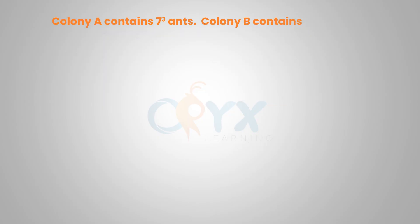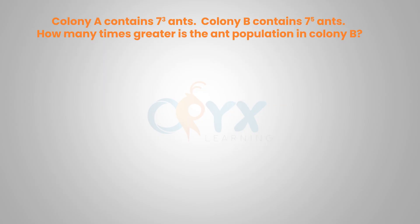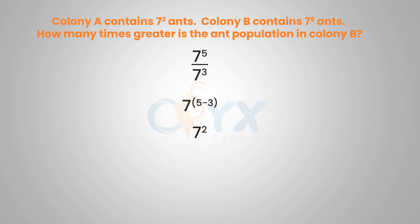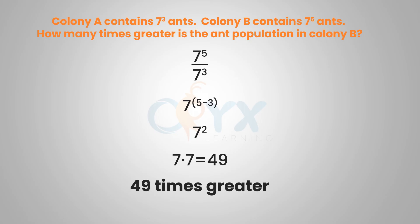Colony A contains 7 to the 3rd ants. Colony B contains 7 to the 5th ants. How many times greater is the ant population in colony B? To compare the two, we divide 7 to the 5th by 7 to the 3rd. With like bases when dividing, we subtract the exponents: 7 to the 5 minus 3, which gives us 7 squared. And 7 times 7, or 7 squared, is 49. So colony B is 49 times greater than colony A.